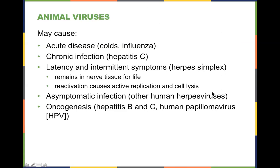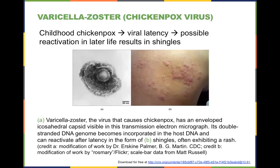Take the example of varicella zoster — chickenpox. Usually something that happens in childhood, with viral latency. But because it infects your nervous system, it can also create shingles later in life. The DNA genome becomes incorporated into the host DNA, which can be reactivated after a period of time. This is your immune system trying to get rid of those cells that carry the DNA genome — mother nature is trying to do a good thing, but it's incredibly painful for individuals who actually have shingles.